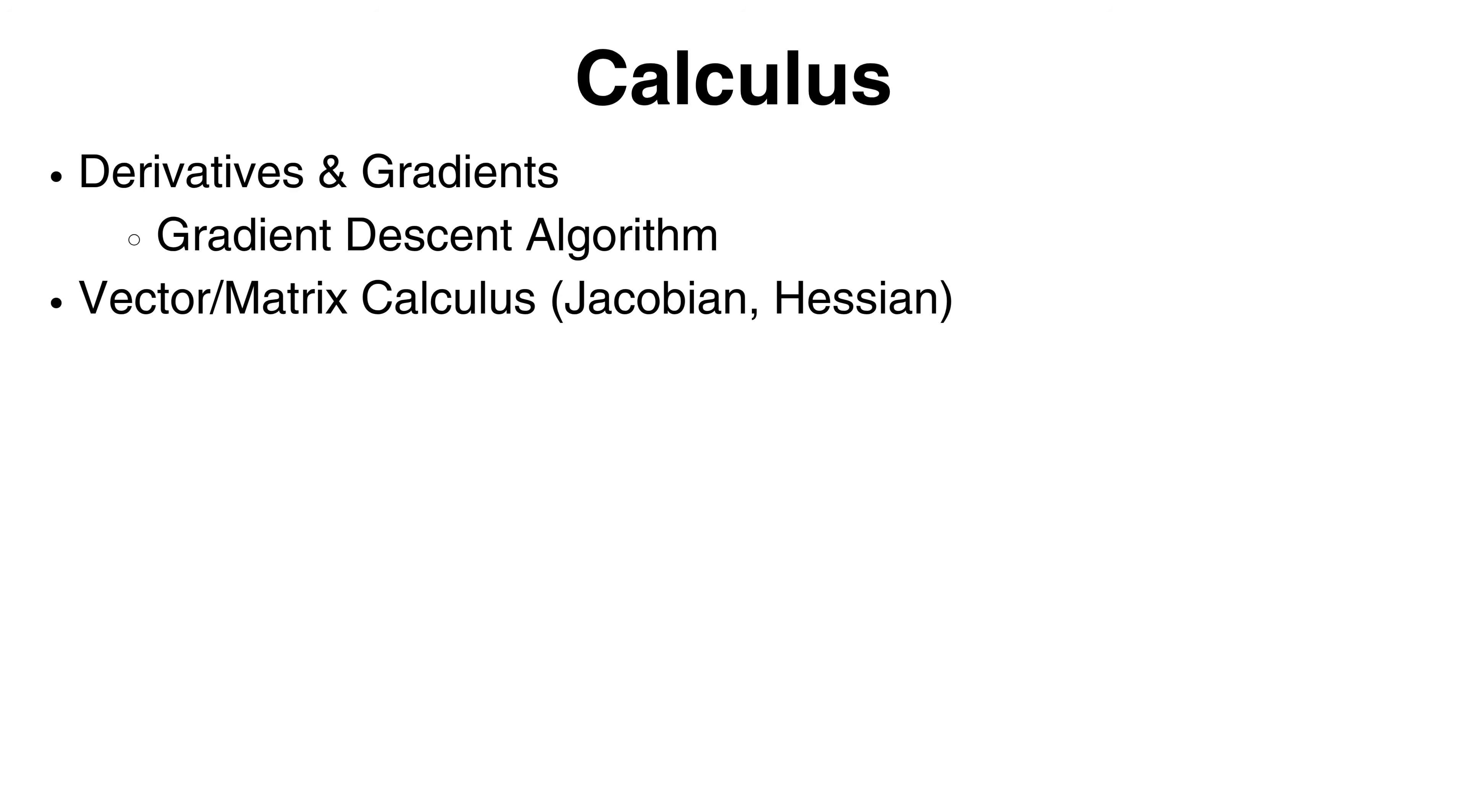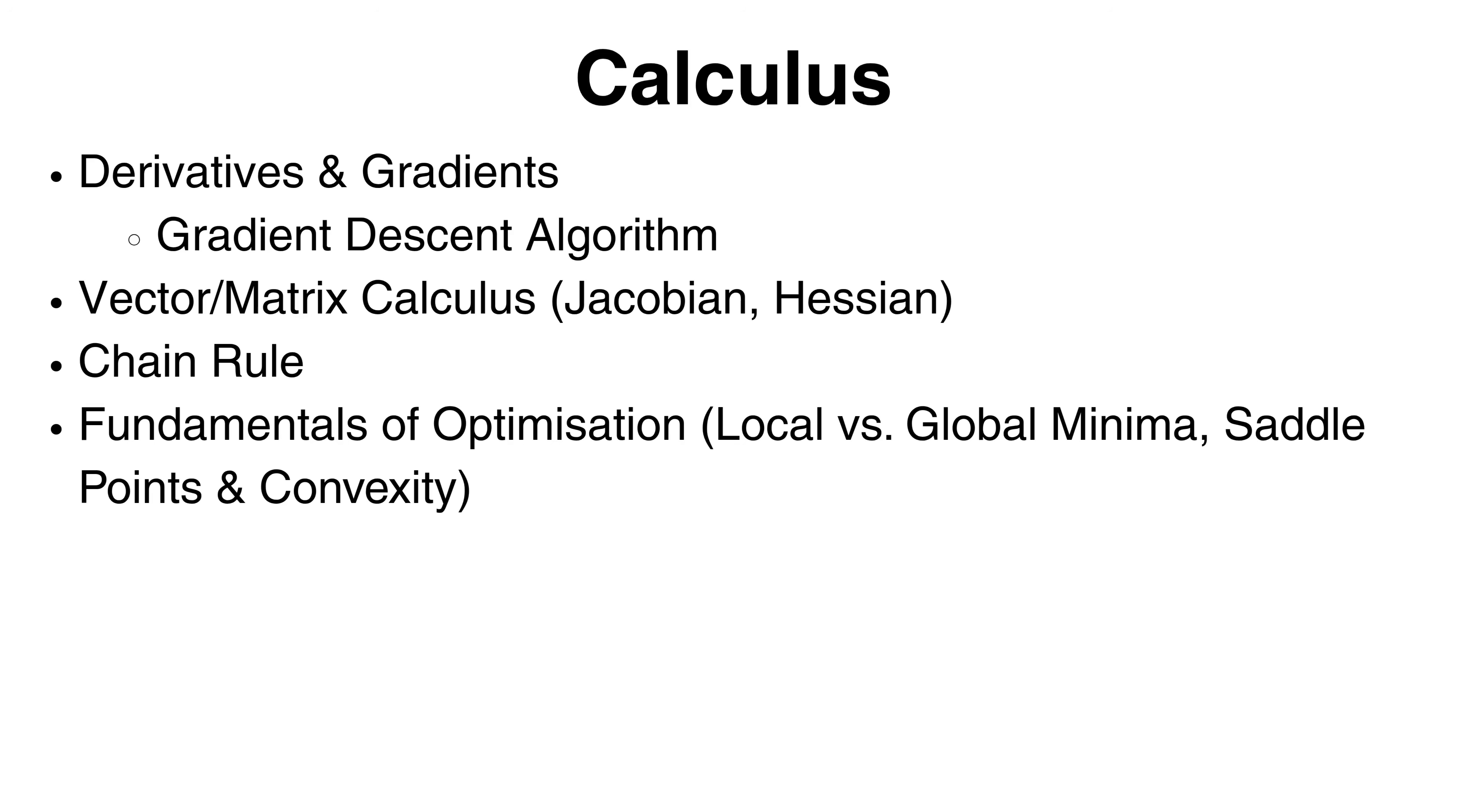Vector or matrix calculus, i.e. the calculus of multiple variables. This includes concepts like the Jacobian and Hessian. The chain rule, this is really at the heart of how backpropagation works in neural networks. And lastly, the fundamentals of optimization. Things like local versus global minima, saddle points and convexity will help you understand why certain models converge well while others might get stuck or overfit.